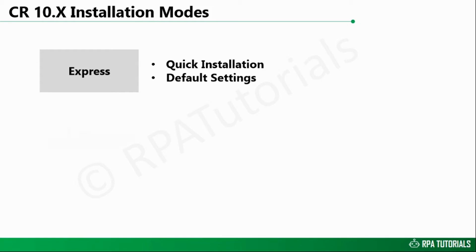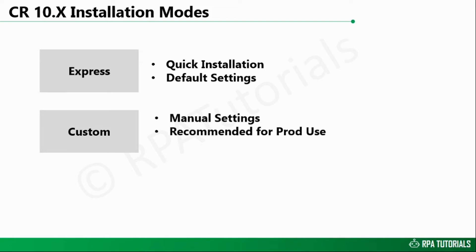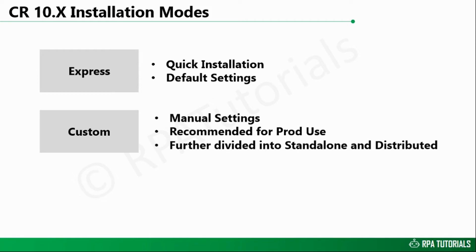The second mode is the Custom Mode, which enables you to install the Control Room using your choice of settings. This method of installation is recommended for a production environment, as it gives you the flexibility to select components for installation. It is further subdivided into standalone and distributed modes, depending upon how you choose to configure the application and data tiers.